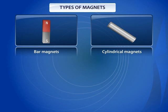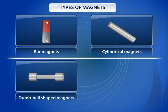Dumbbell-shaped Magnets: In such magnets, the poles are located at the two dumbbell-shaped ends.